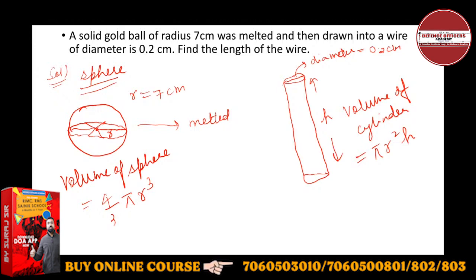So this volume we have to equate. The volume will be the same - why will the volume be the same? Because we have drawn that ball into a wire. So here we have 4 by 3 pi, I'll not solve pi, into r - r here is how much? Seven. So 7 × 7 × 7, I'll not solve. And here volume will be pi r, radius is how much? Diameter is 0.2, so 0.1 will be 1/10 × 1/10 into h. Our main find is h.